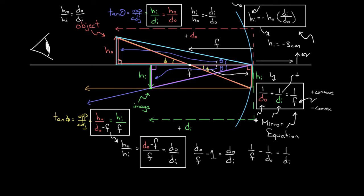To recap: using similar triangles, we derived a mirror equation that relates object distance, image distance, and focal length. Along the way, we also derived a magnification equation relating the heights and distances of the image and object. Be careful with signs: object distance is basically always positive; focal length is positive for concave mirrors and negative for convex mirrors; image distances are positive if in front of the mirror and negative if behind it.